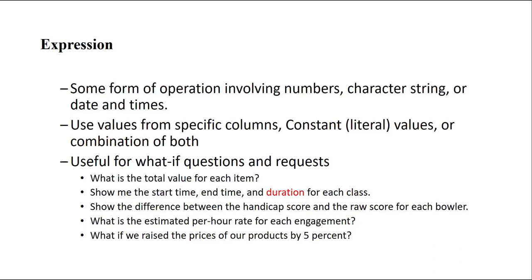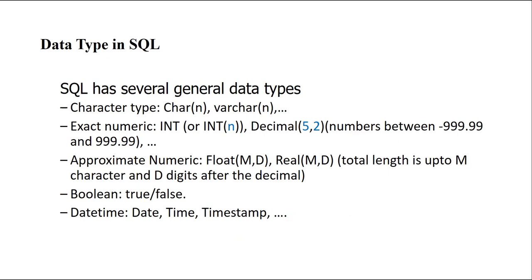In a sales database, we can get the total value for each item by multiplying the price by the number of available items in stock. Any use of columns multiplied by numbers, or subtraction of two columns, or summation of two columns — we call them expressions. Now let's talk about data types in SQL, which we briefly mentioned in previous lectures.